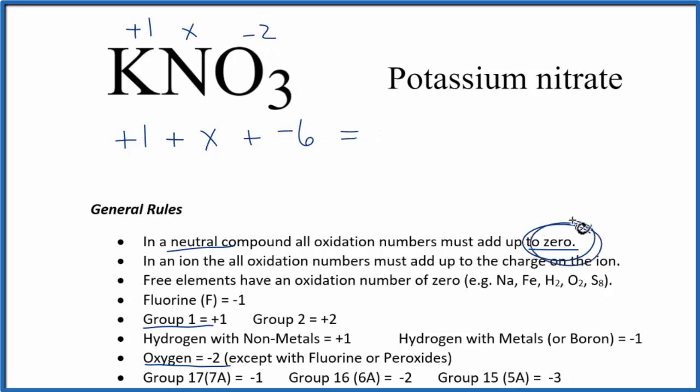And that all equals zero. So we have X minus five equals zero. So X is going to equal plus five.